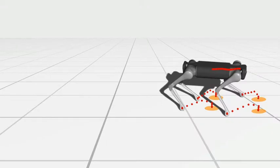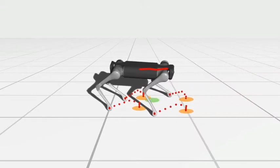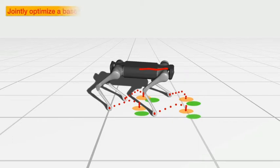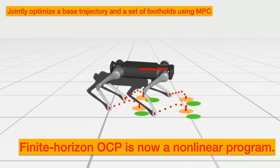To resolve this problem, we jointly optimize a base trajectory and a set of footholds using NMPC. In this approach, the finite horizon optimal control problem turns into a nonlinear programming problem.